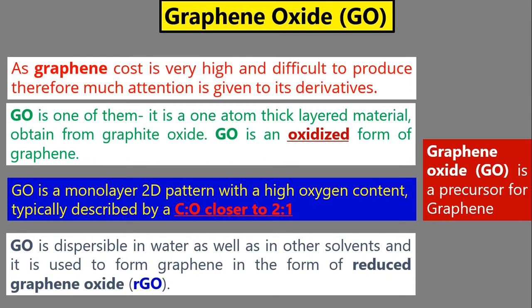Graphene oxide is a monolayer two-dimensional material with a high oxygen content. Literature review shows that the ratio of carbon to oxygen is approximately 2:1, meaning for every two carbon atoms there is one oxygen atom.